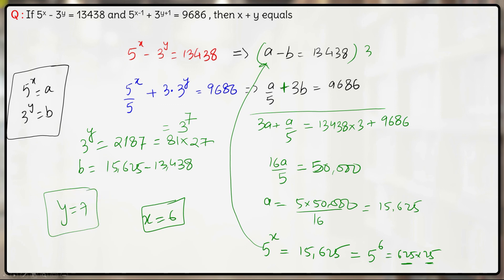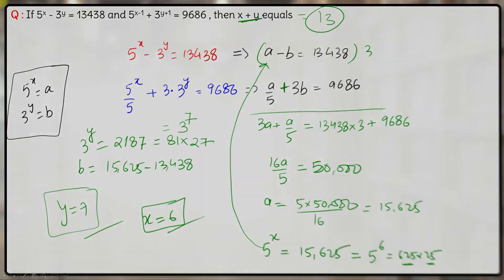So x is 6 and y is equal to 7. Hence the value of x plus y will come out to be 6 plus 7, which is 13. The value of x plus y is 13. So that is it for this question, thank you.